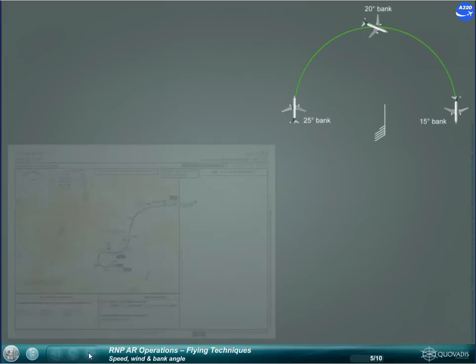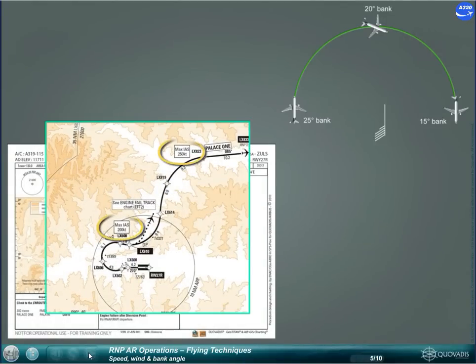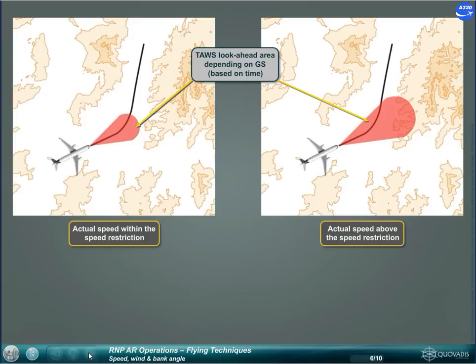A local or statistical wind model is taken into account in procedure design. The bank angle along an RF leg depends on the ground speed. Procedure speed constraints may be required in order not to exceed the maximum bank angle capability of the AFS in case of very strong winds. In some specific cases, speed constraints might be published to prevent terrain awareness and warning system cautions. Speed constraints might also be published for energy management reasons — for example, approach configuration management.